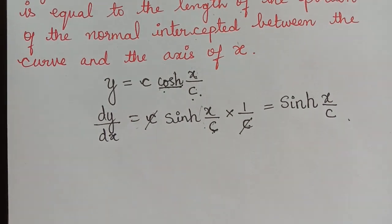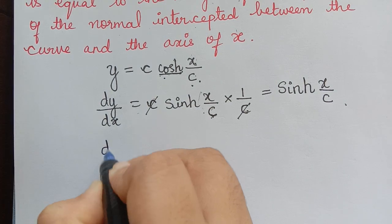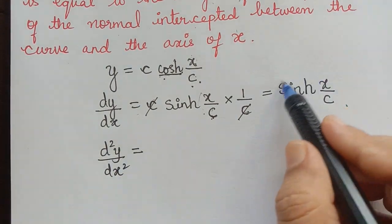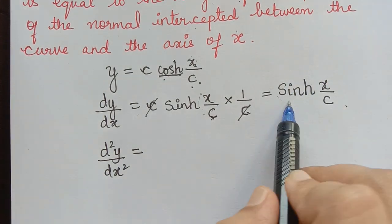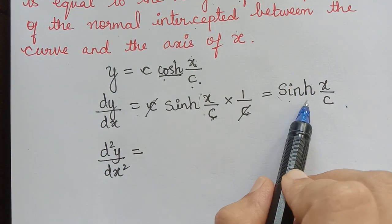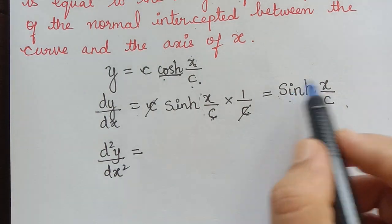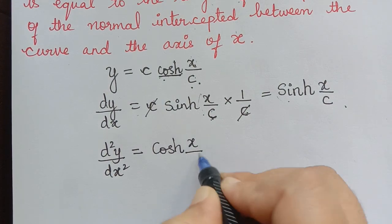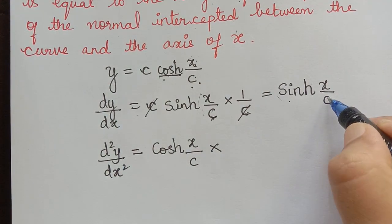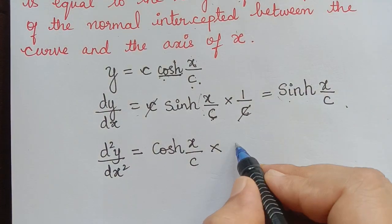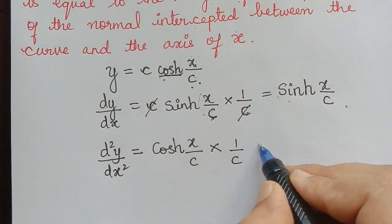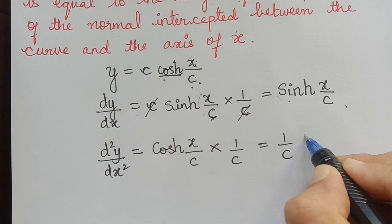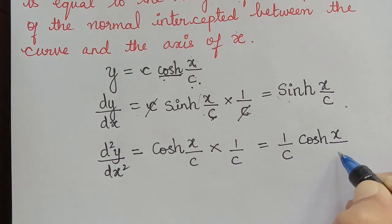After finding dy/dx, we have to find d²y/dx² by differentiating again with respect to x. The differentiation of sinh(x) is cosh(x), so differentiating sinh(x/c) gives cosh(x/c) multiplied by 1/c. Therefore, d²y/dx² = (1/c)·cosh(x/c).